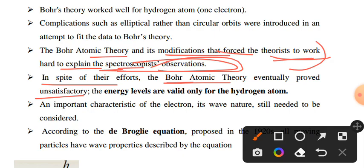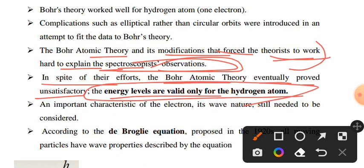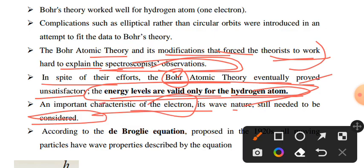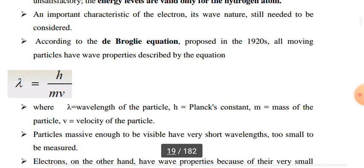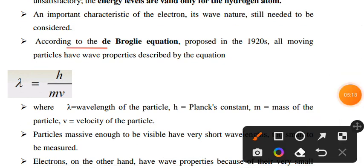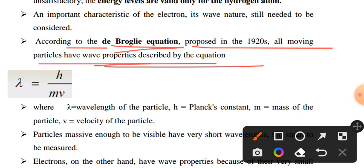Energy levels are valid only for the hydrogen atom. An important consideration is the electron's wave nature needs to be considered. According to the de Broglie equation, many moving particles have wave properties described by the equation.